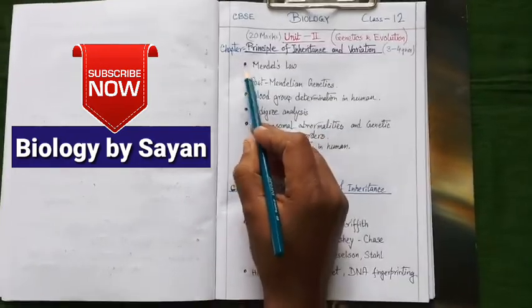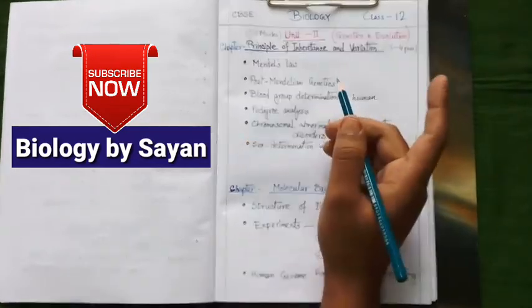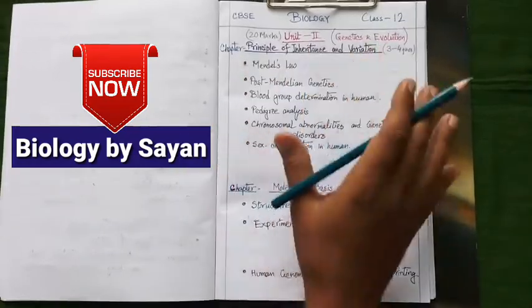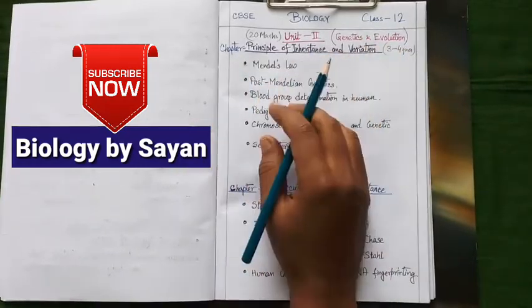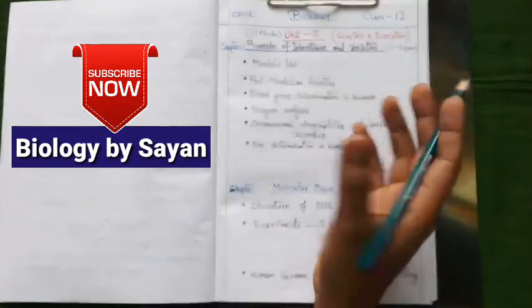Let's discuss about different important topics from this chapter. Our first topic is Mendel's law. There are three laws given in your book: law of dominance, law of segregation, law of independent assortment. You need to know the definition, all the definitions of these laws as well as their explanation according to the monohybrid and dihybrid cross.